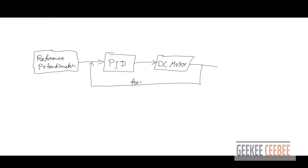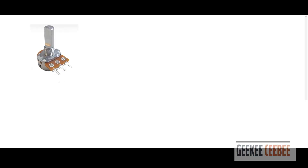We'll send a feedback signal so we can calculate the error. Based on that error, the PID will be able to control the DC motor position. So our input is the reference potentiometer. This is a rotary potentiometer with variable resistance. There's a VIN — we're going to input 5 volts to it — and a ground, and then the middle pin will send the voltage out.